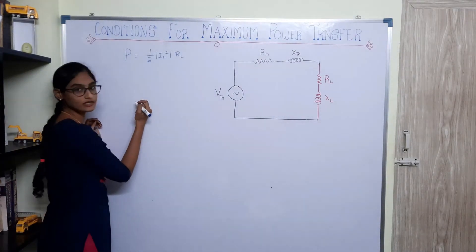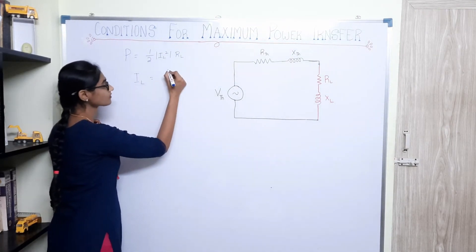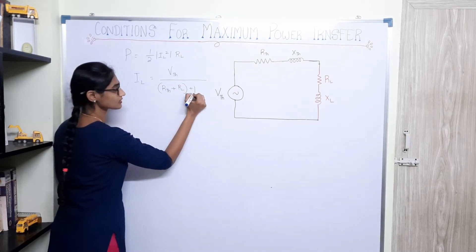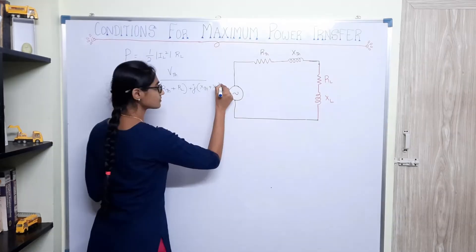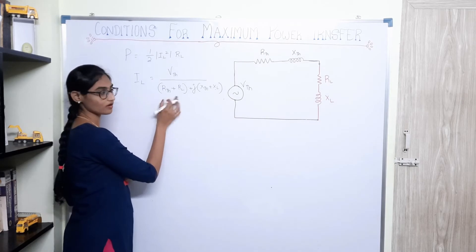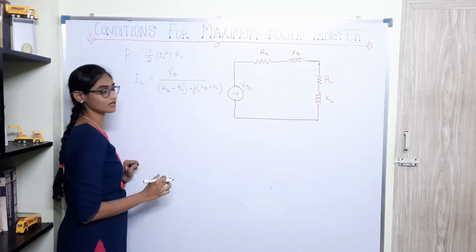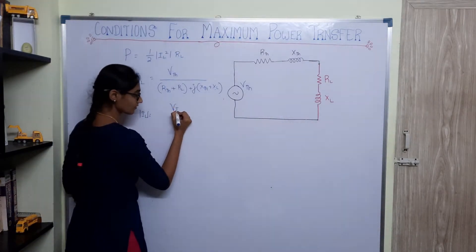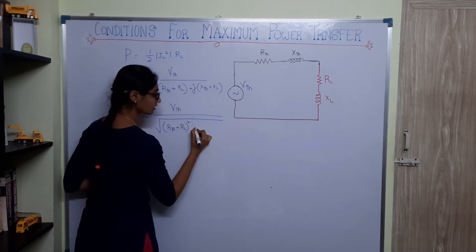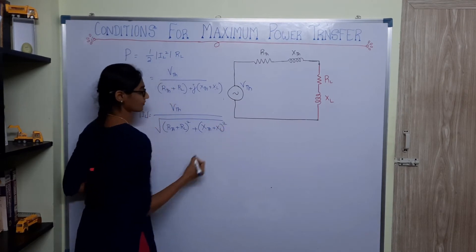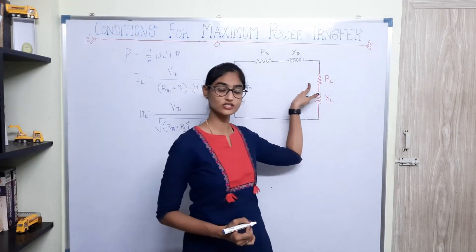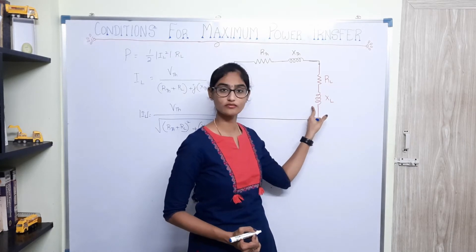What is IL? Current is voltage divided by total impedance. So IL = VTH / (RTH + RL + j(XTH + XL)). The magnitude of IL = VTH / √((RTH + RL)² + (XTH + XL)²). Here we have two variable terms: the resistance and the impedance. We can either vary the resistance or vary the impedance to achieve maximum power transfer.